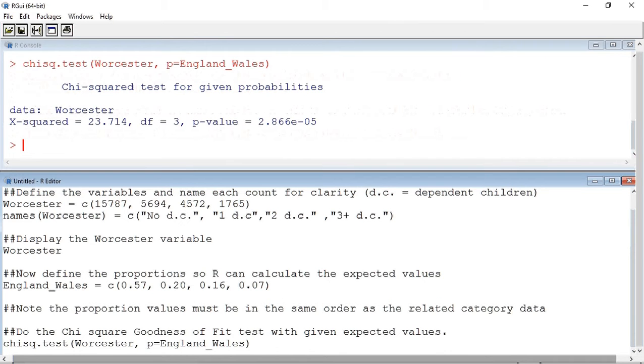Let's do the test. As we can see the test is chisq.test Worcester, comma. You then have an attribute P equals England-Wales. That's instructing R to use the proportion values in the England-Wales variable.